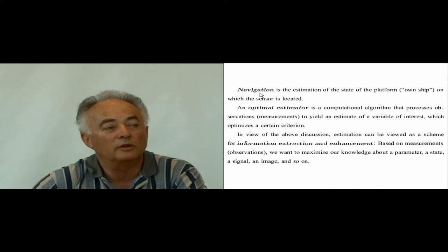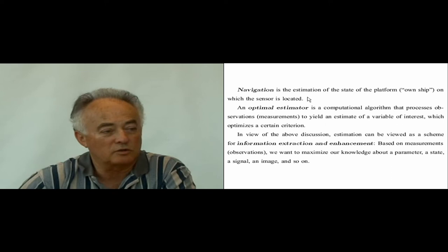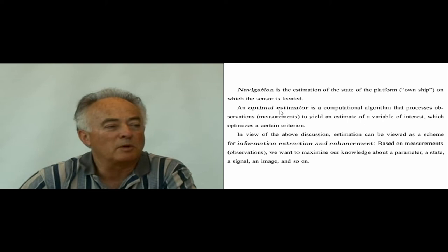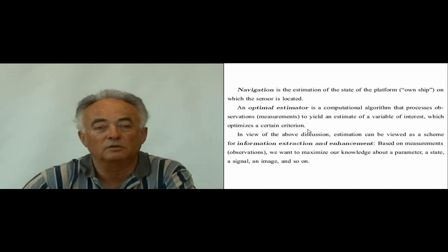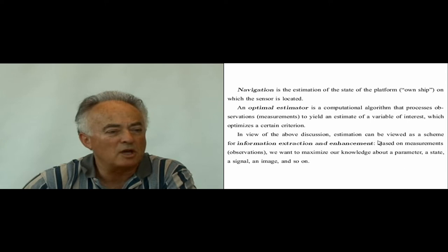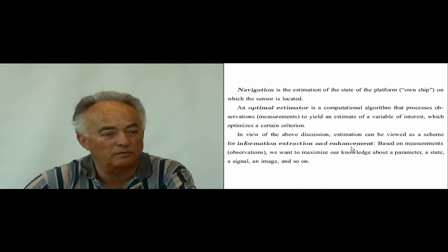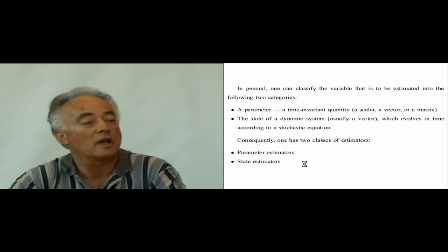Navigation is closely related to what we will cover: it is the estimation of the state of the platform — called ownship — on which the sensor is located, answering the question 'where am I?' An optimal estimator is a computational algorithm that processes observations to yield an estimate of a variable of interest, optimizing a criterion such as minimum mean square error. Estimation is thus a scheme for information extraction and enhancement — maximizing our knowledge about a parameter, state, signal, or image.